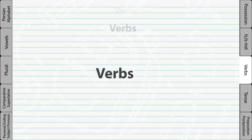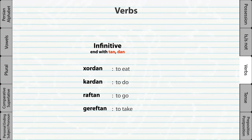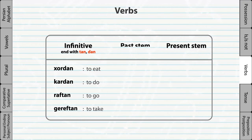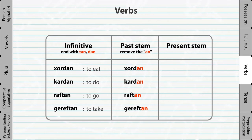Verbs. In the Persian language, infinitives end with 'tan' or 'dan.' There are two stems in Persian: the infinitive stem and the present stem. The infinitive stem, also called the past stem, is made simply by removing the 'an' from the infinitive. But the present stem is a bit more different. Since almost all the present stems are different, it is wise to memorize each word separately.